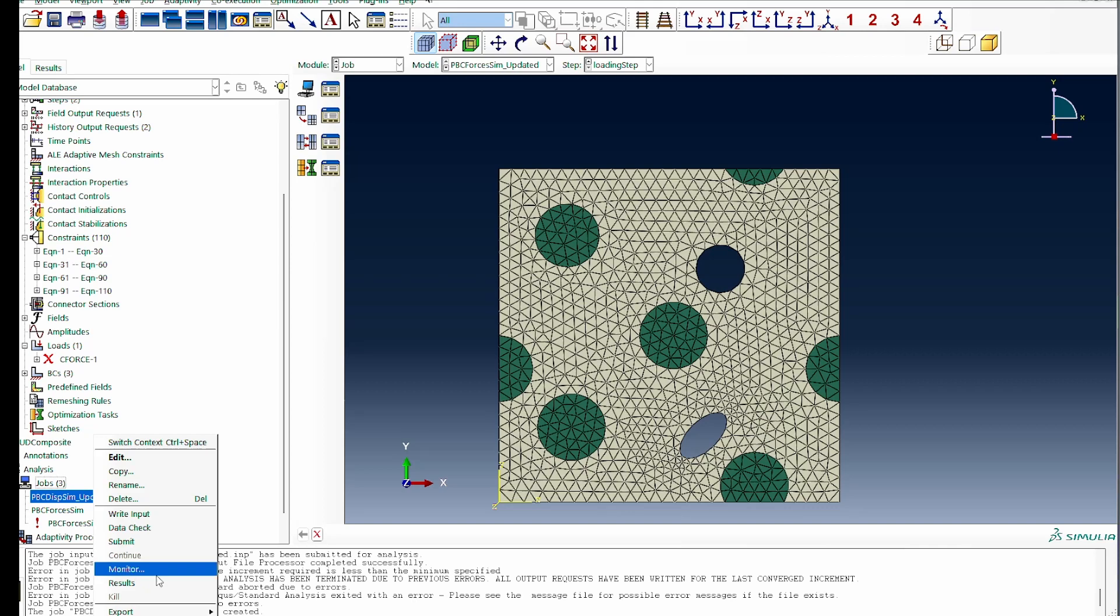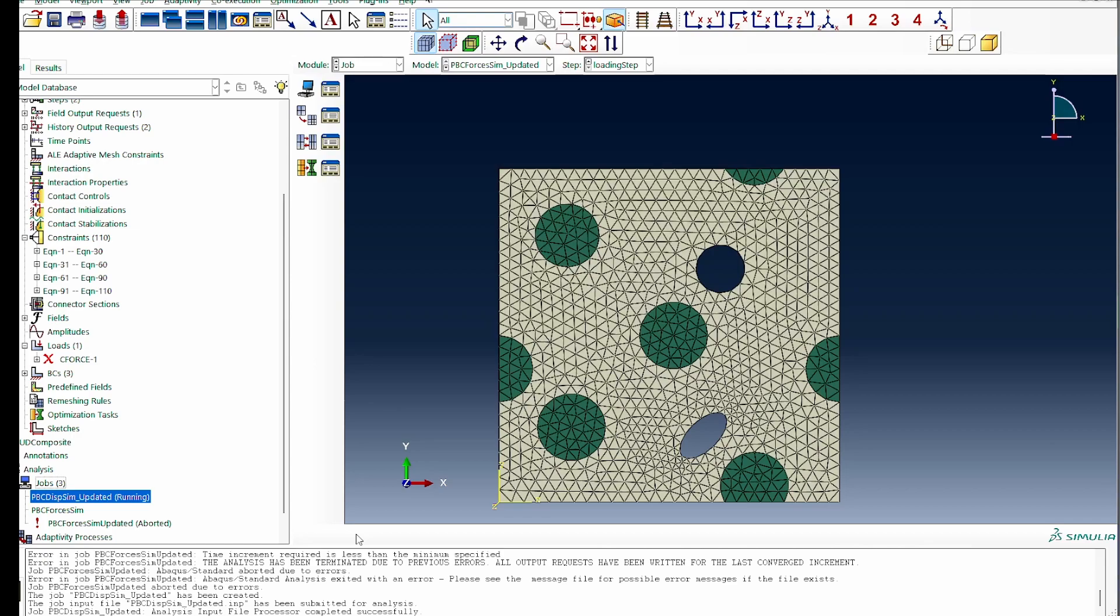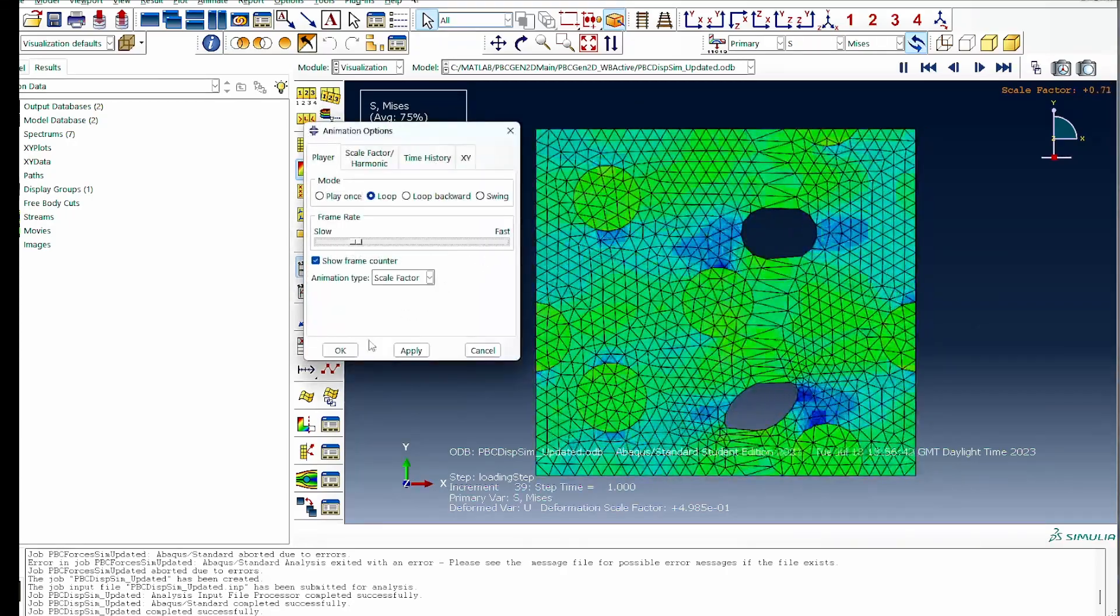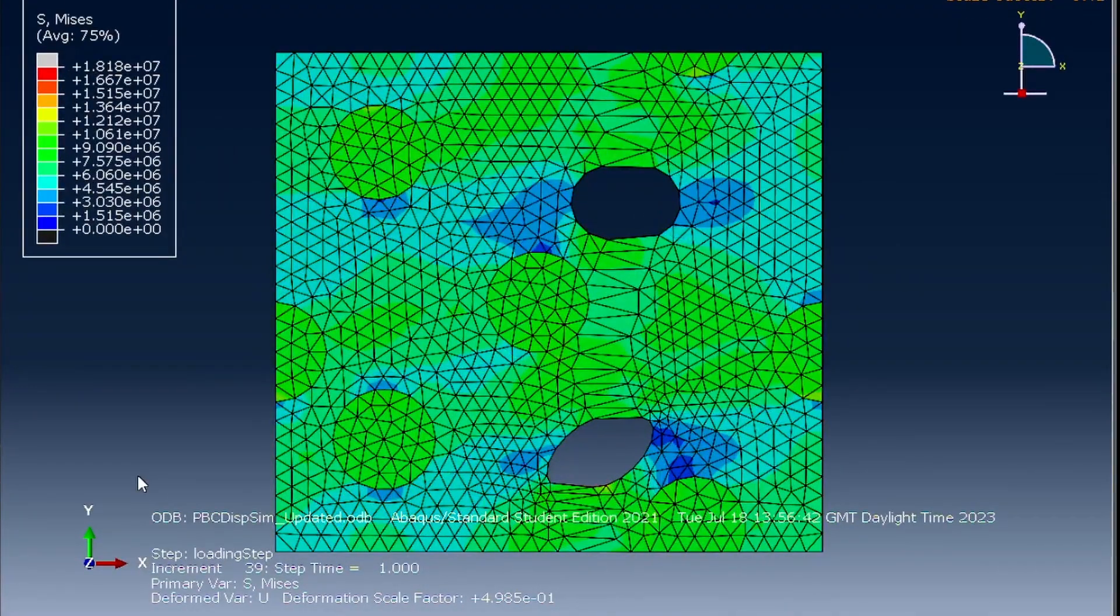Let's call it displacement load and apply it right on this model. Say the length of this region is 100, so let's apply a 20% strain on the model. I'll call it PBC displacement - a similar simulation like the other one, just that this time we're working with displacement. I could also submit the job and watch what is happening. Remember, the system is PBC aware. The only thing we are changing is swapping the forces with the displacement.